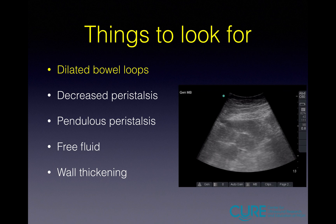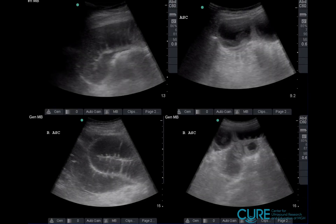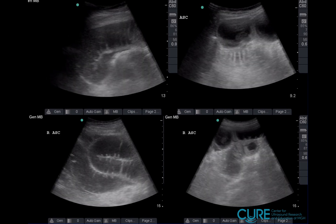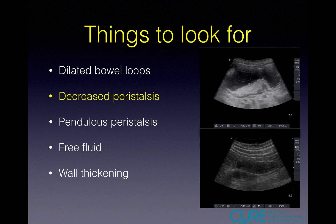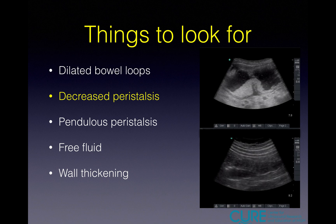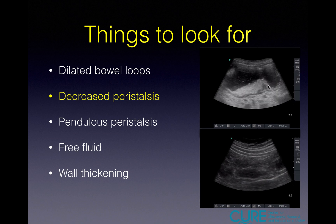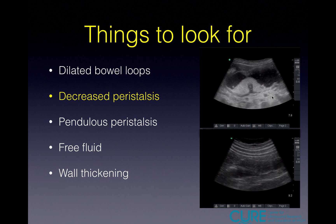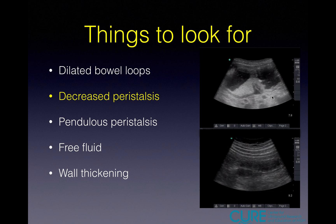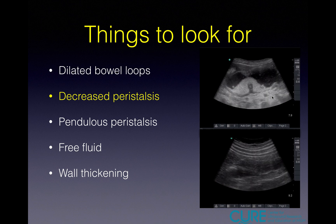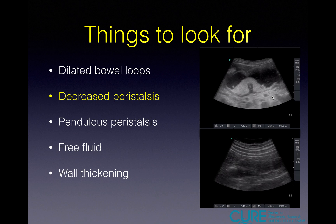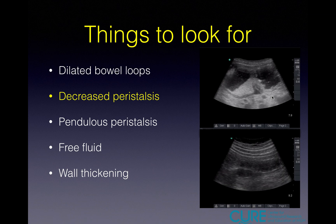First, dilated loops of bowel — more than 2.5 centimeters, as was seen in the patient we discussed initially. Next is decreased peristalsis. Normal peristalsis shows the smooth muscle of the bowel just plowing the contents down like a bulldozer. Looking for the absence of peristalsis is something we assess when looking for bowel obstruction — it can help differentiate from ileus. Ileus should have no peristalsis, while decreased but present peristalsis is more likely to be bowel obstruction.